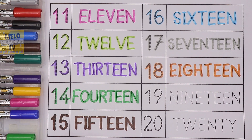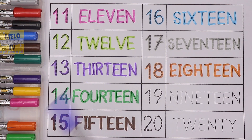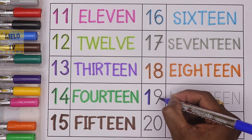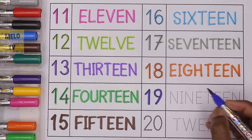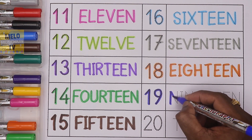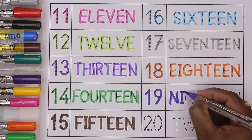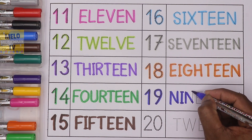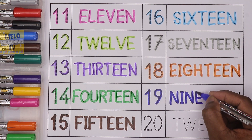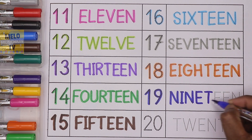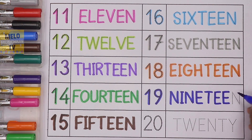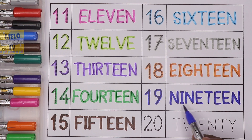Next I'll take dark blue color to write number 19. 1, 9, 19. And the spelling is N I N E T E E N. 19, 1, 9, 19. N I N E T E E N, 19.